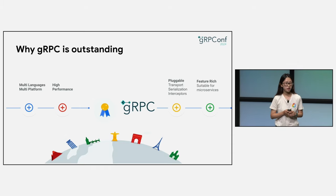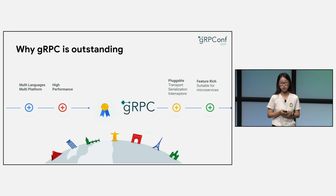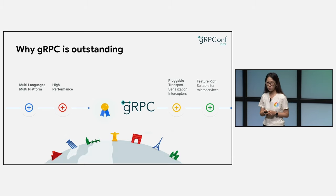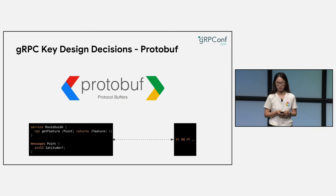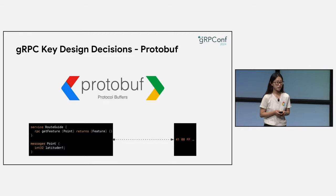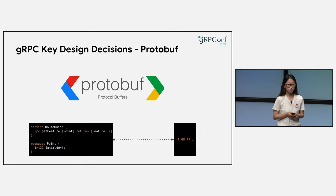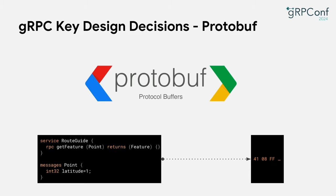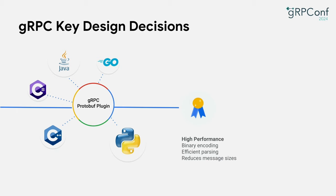gRPC has rich features around core traffic management, security, and tailored ones for service mesh, just to name a few. gRPC's popularity stands on a few key fundamental design decisions that bring cutting-edge technologies on top of it. One is that gRPC uses Protobuf for data serialization and generating interfaces. Protobuf is an open-source, language-agnostic framework, and all of the gRPC language implementations use a Protobuf plugin to generate interfaces. Therefore, these languages can talk with each other over various devices and platforms.